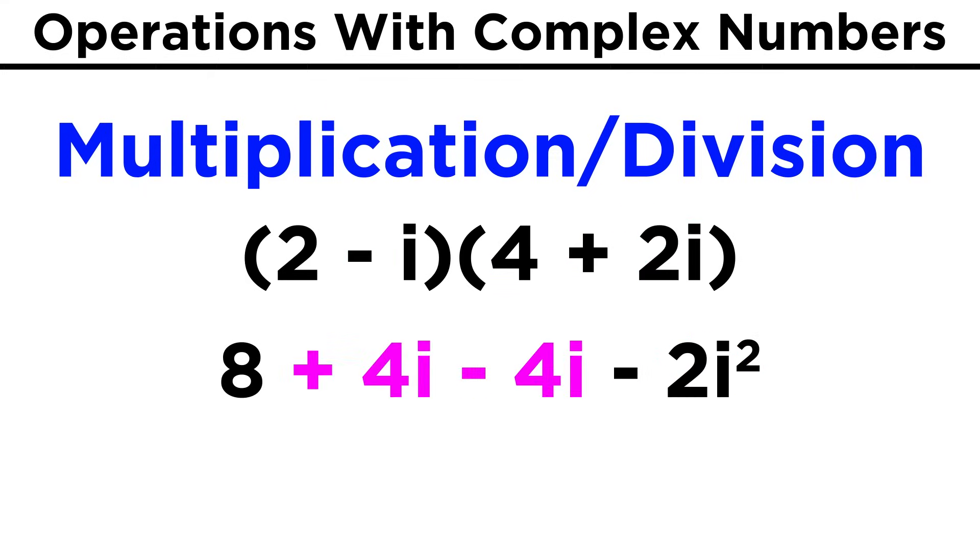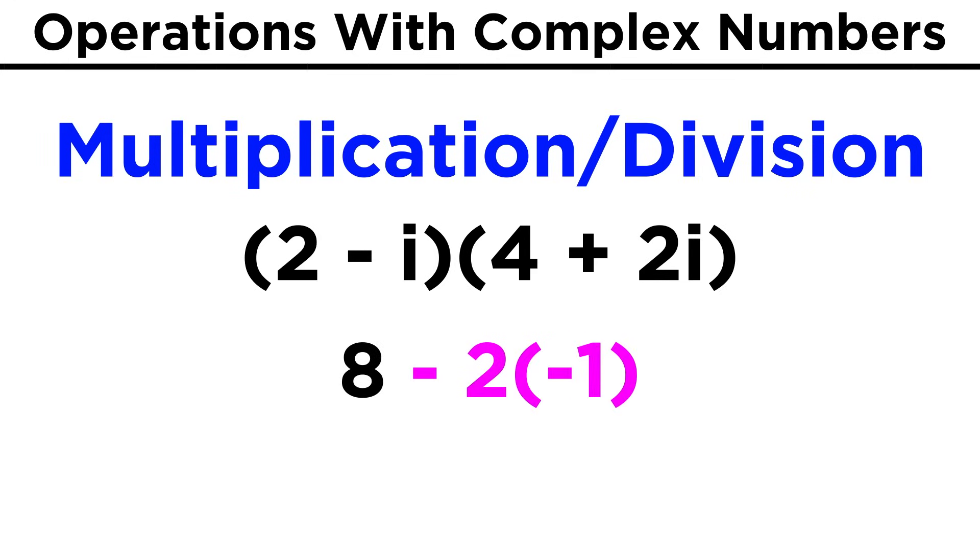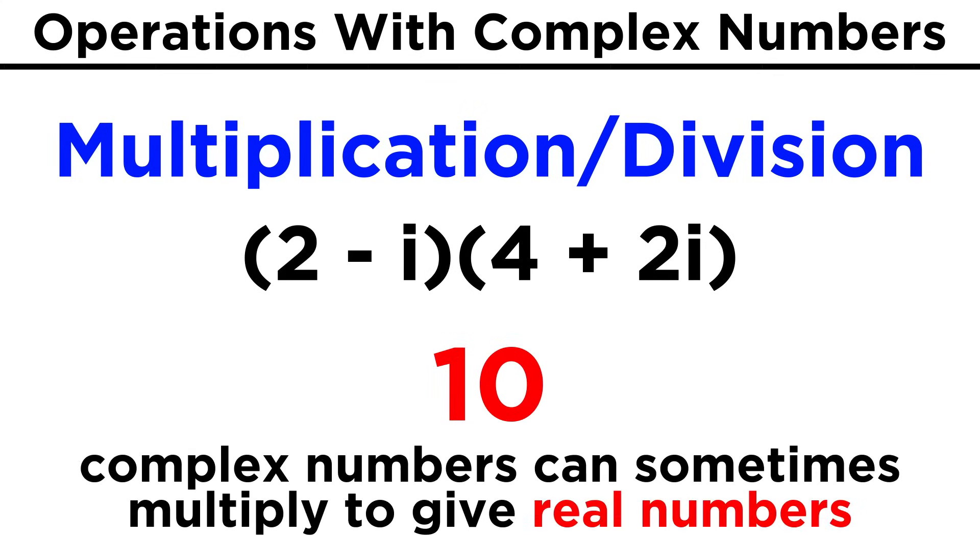The two i terms cancel each other out, and negative two i squared is negative two times negative one, which is two, so we get eight plus two, or ten. This is how complex numbers can sometimes multiply to give real numbers.